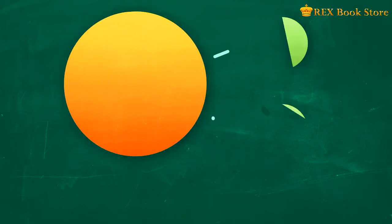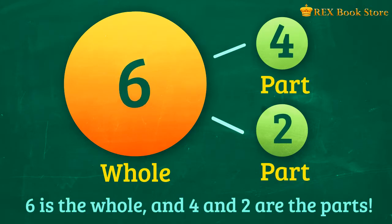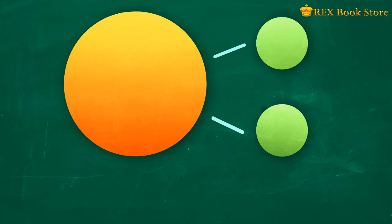Let's practice what you have learned so far. Can you tell me which number represents the whole and which represents the parts? 6 is the whole and 4 and 2 are the parts. Let's try it again. Can you name the whole and the parts? Did you get it correctly?